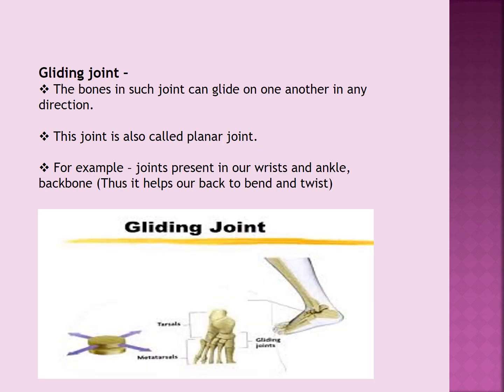Fourth is gliding joint. The bones in such a joint can glide on one another in any direction. This joint is also called planar joint. For example, joints present in our wrists and ankle. If you try to move your wrist, you will notice that it moves in any direction because the small bones present in our wrists glide over one another, giving us this kind of motion. This joint is also present in our backbone, which consists of 33 small bones that glide over one another and help us to bend and twist.